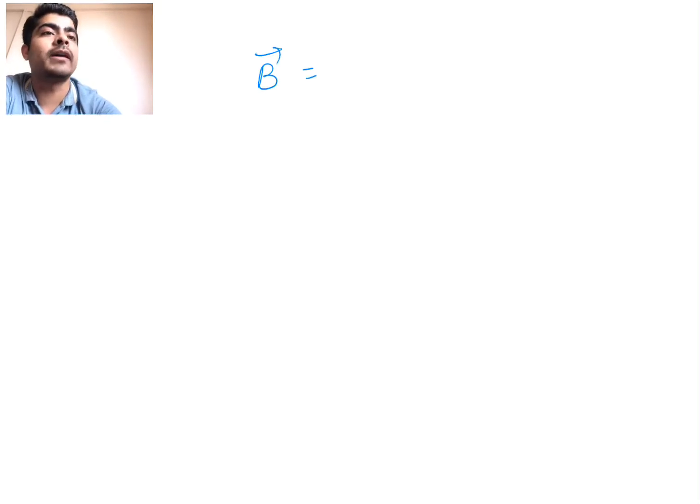Now what if there's a negative sign involved? For example, I have a vector b given by 6 i cap minus 8 j cap. How do you solve this?